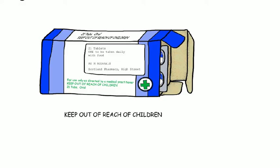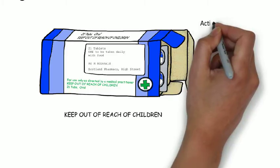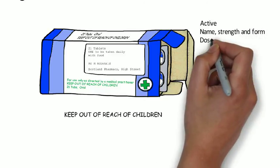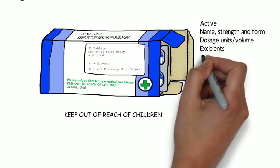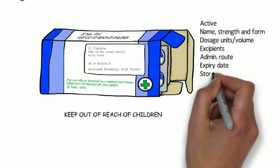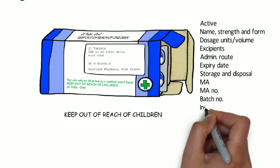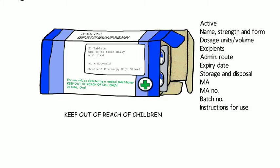The outer packaging of medicinal products must be labelled in accordance with the regulations. The following information must appear: the name, form, and strength of the product; the active ingredient; the number of dosage units or volume; the list of excipients; the method of administration; a warning that the medicine should be kept out of the reach and sight of children; any other warnings, for example keep out of direct sunlight; the expiry date in month and year; special storage requirements; special precautions relating to disposal; the name and address of the marketing authorisation holder; the marketing authorisation number; the manufacturer's batch number; and for non-prescription medicines, instructions for use.